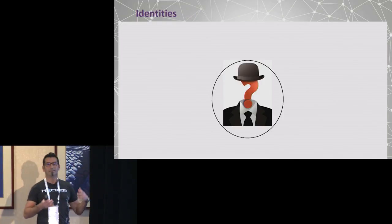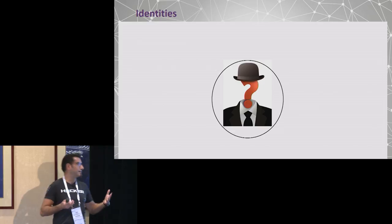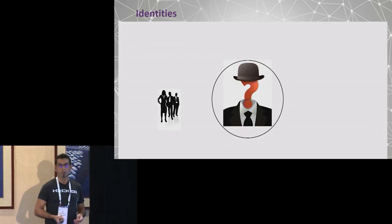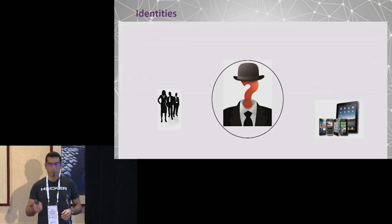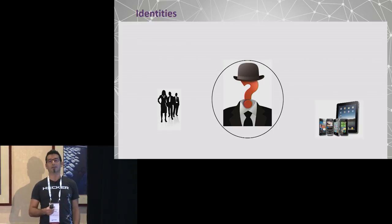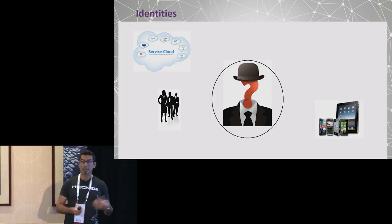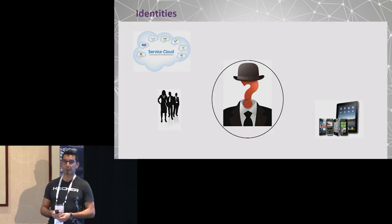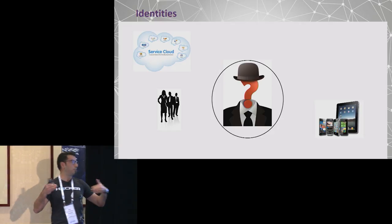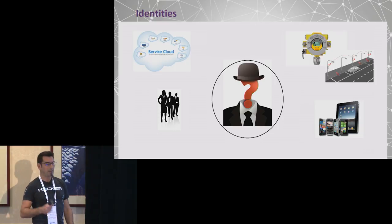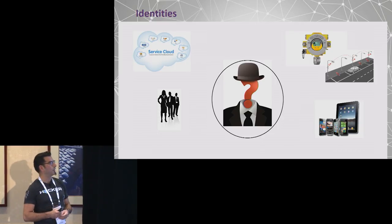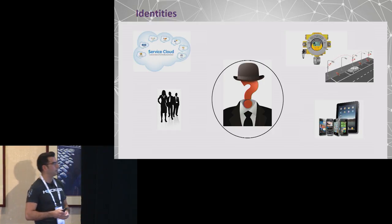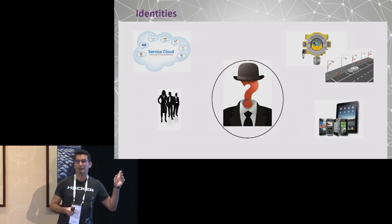What fits into those definitions? Examples include users, of course — people have identities — but also smart devices like your mobile phone. Cloud services fit that description as well because they often communicate with each other. And last but not least, IoT devices like smart sensors, or examples from the smart city with smart parking meters and smart lights. All of these are identities.